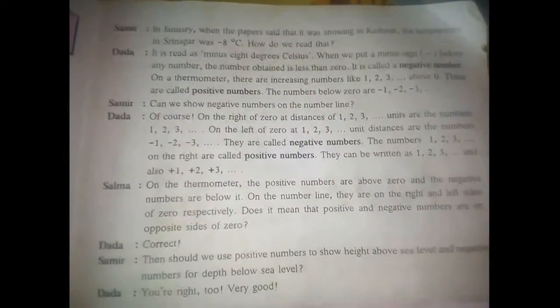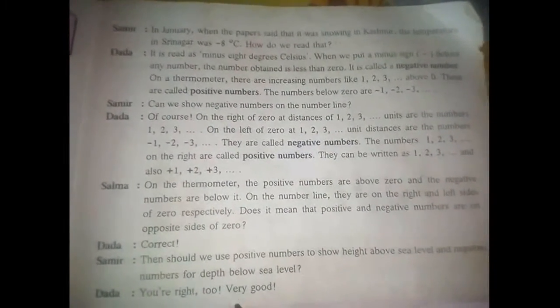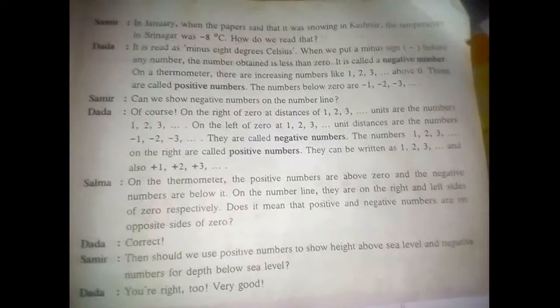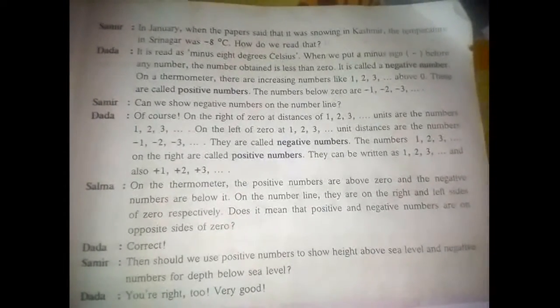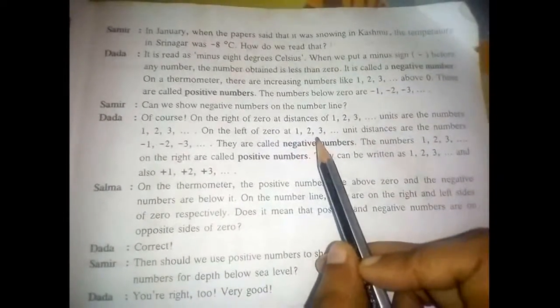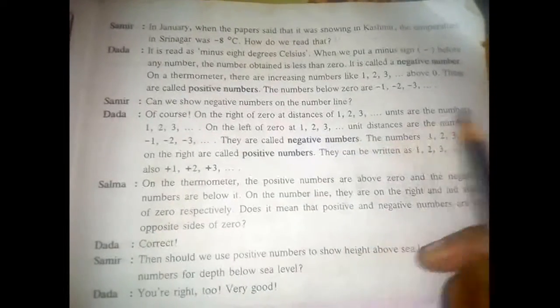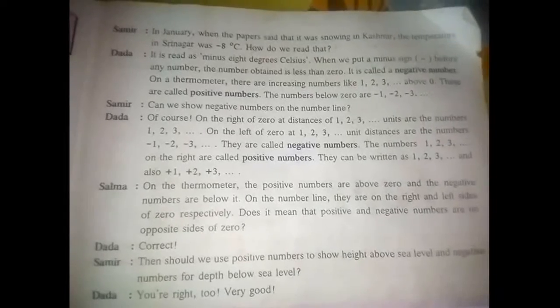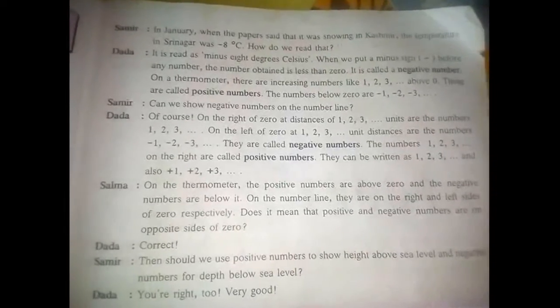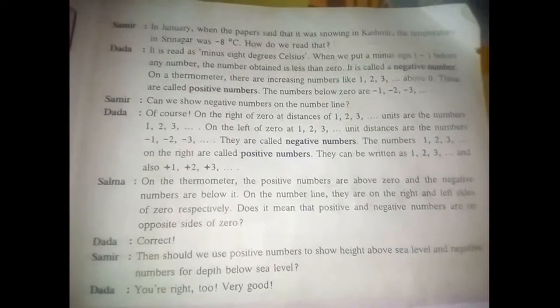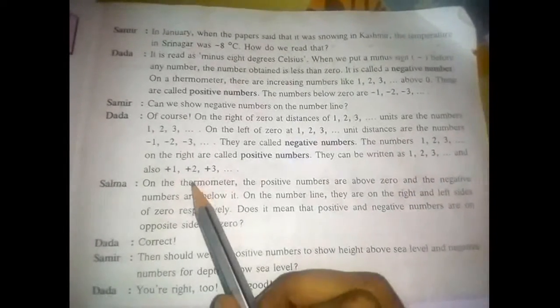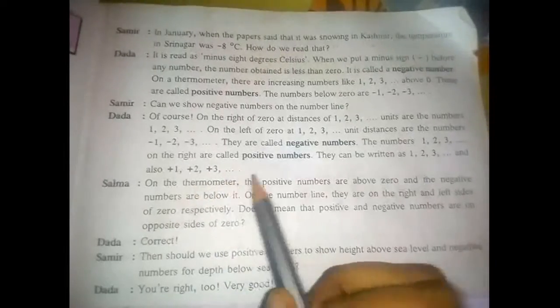Numbers on the right of 0 at distances of 1 to 3 units are the numbers 1 to 3. On the left of 0 at 1 to 3 unit distances are the numbers minus 1, minus 2, minus 3 — they are called negative numbers. The numbers 1, 2, 3 on the right are positive numbers and can also be written as plus 1, plus 2, plus 3.